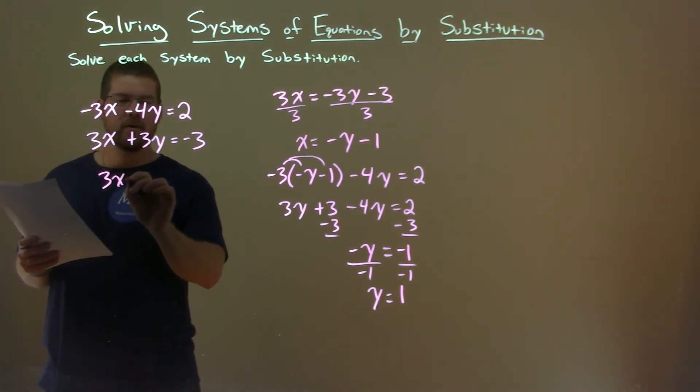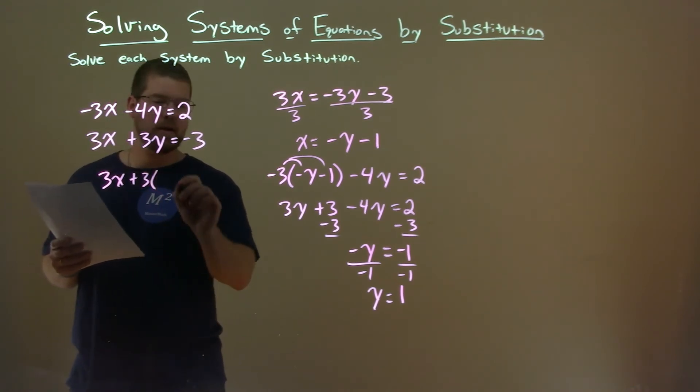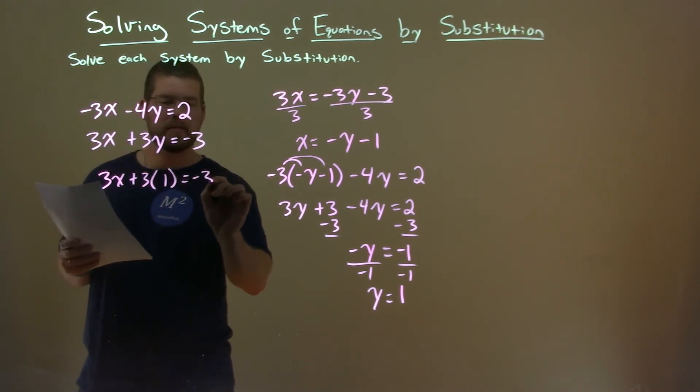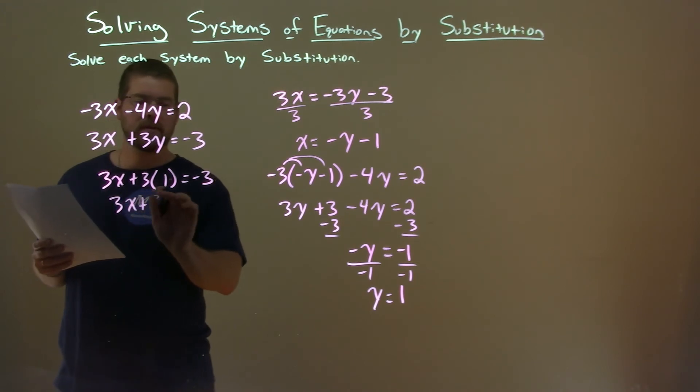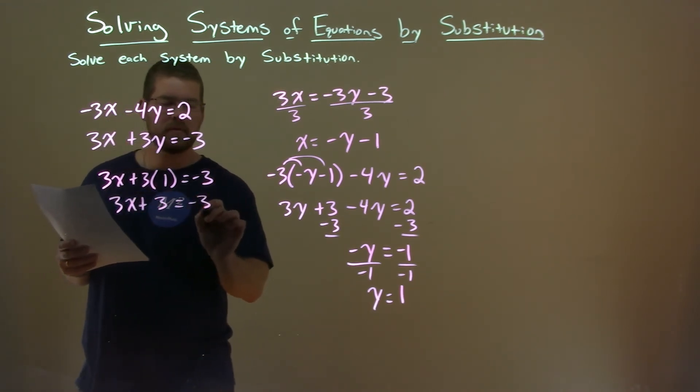So 3x here plus 3 instead of y, I'm putting positive 1, equals negative 3. 3x plus 3 times 1 is 3, equals negative 3.